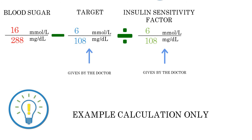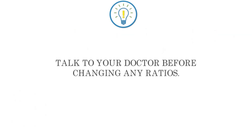The calculation is as follows: current blood glucose reading minus the target level, divided by the insulin sensitivity factor. Practice these calculations and know them by heart. These ratios and factors are prone to change over time, so always consult with your doctor or diabetes care team before adjusting any of them.